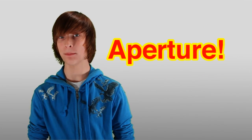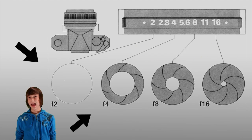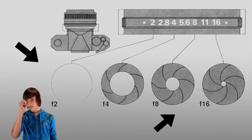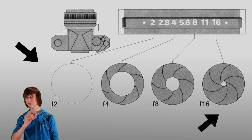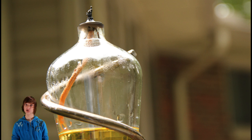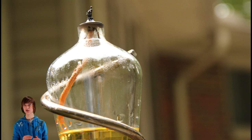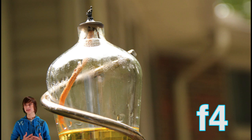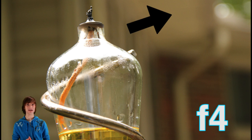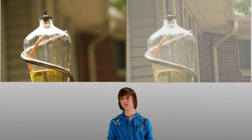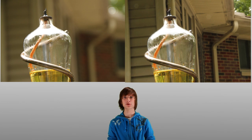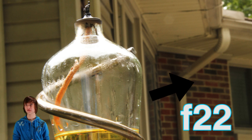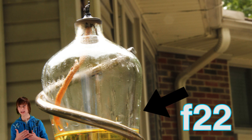The f-stop is also known as the aperture. The aperture is something inside your lens — it's a circle that gets bigger and smaller depending on your settings. This picture was shot with the aperture set at f/4, the biggest aperture on the lens. As you can see, the subject of the picture is very separated from the background. And in this picture I have the aperture set at f/22, and you can see that the background distracts you from the subject and there's not much isolation.